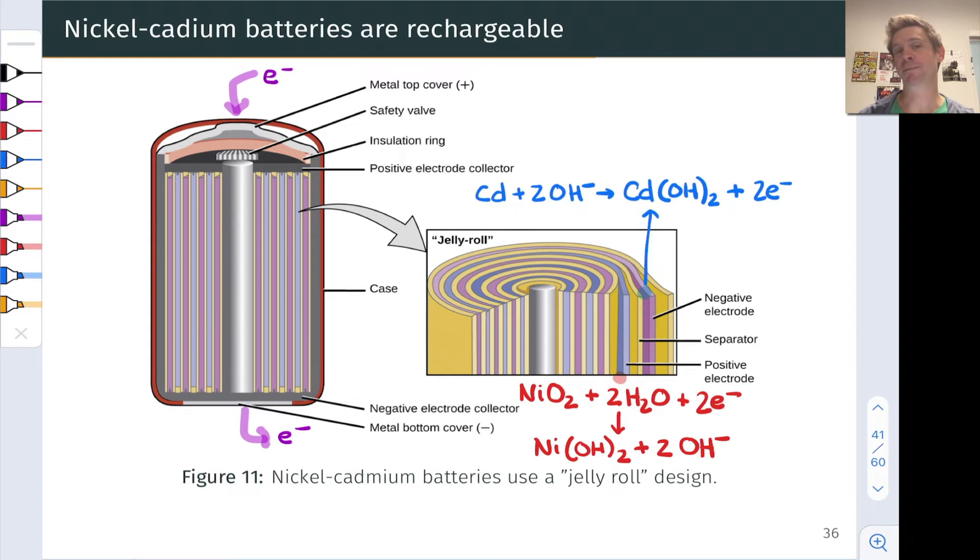Nickel-cadmium batteries are a first example of a secondary cell. And these are rechargeable and use a really interesting kind of jelly roll design where the two electrodes are lined up in sort of sheets so that there's a huge contact surface area between the electrodes and the electrolyte or separator that you see here.